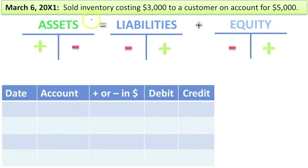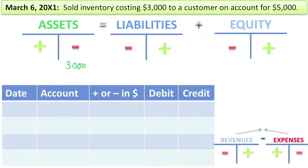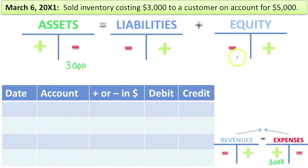March 6th, we sold inventory costing $3,000. Let's focus on that part. You gave away inventory costing $3,000. When you give away inventory to bring about a sale, that's an expense. Your assets are flowing out in order to generate a sale, so we've got to record an expense. Assets went down and as this comes up, this debit will flow up and become a negative over here in equity, so assets will go down and equity will go down. That's the first part of this transaction.